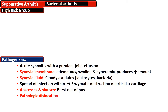The spread of infection within the joint space leads to enzymatic destruction of the articular cartilage. Multiple abscesses and sinuses form, and pus can be extruded from these sinuses. In advanced stages, bacterial arthritis can lead to pathologic dislocation.